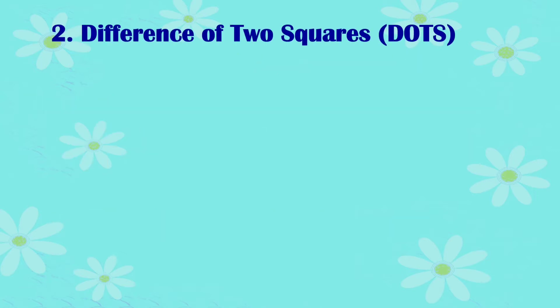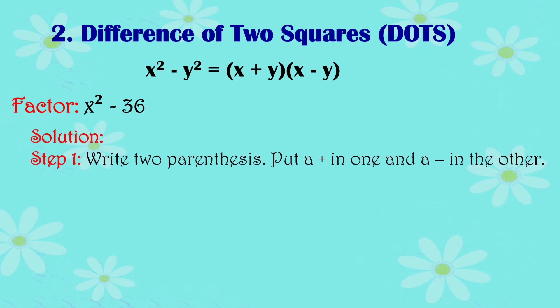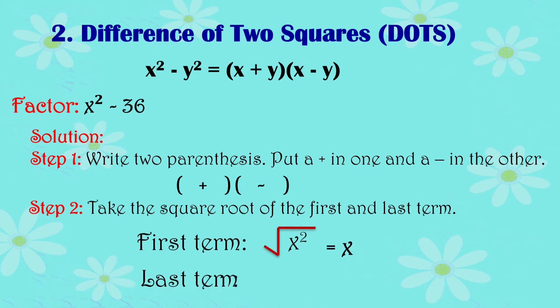Number 2: Difference of Two Squares. The pattern is x squared minus y squared equals the quantity x plus y times the quantity x minus y. Let's factor x squared minus 36. Step 1: Write two parentheses, put a positive sign in one and a negative in the other. Step 2: Take the square root of the first and last term. The square root of x squared is x, and the square root of 36 is 6.